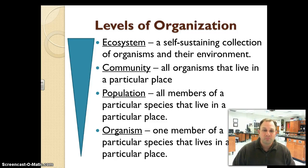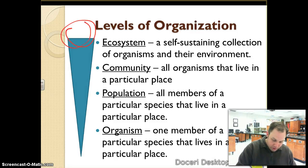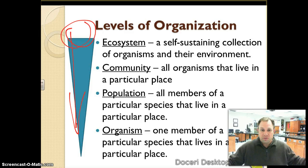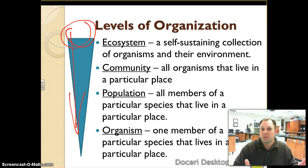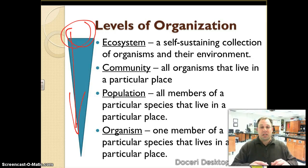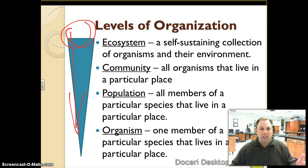Here are our levels of organization. We talked about biosphere and biomes. The largest level is our ecosystem — the largest self-sustaining collection of organisms. Within that ecosystem we have individual communities, which are organisms that live in a particular place. Then we have a population, such as a group of elephants or a group of tigers. Then you get down to the individual organism. For example, the entire state of Texas could be that ecosystem with all the plants and animals that live within it.